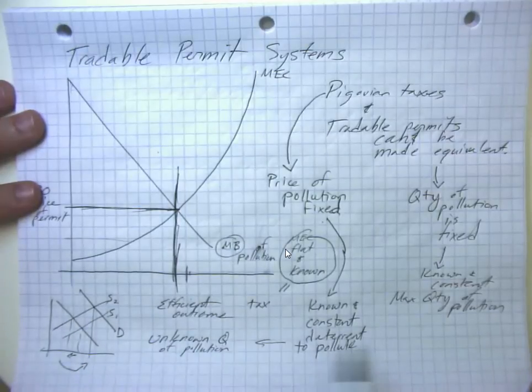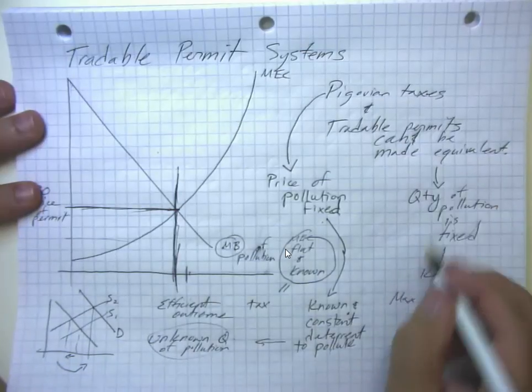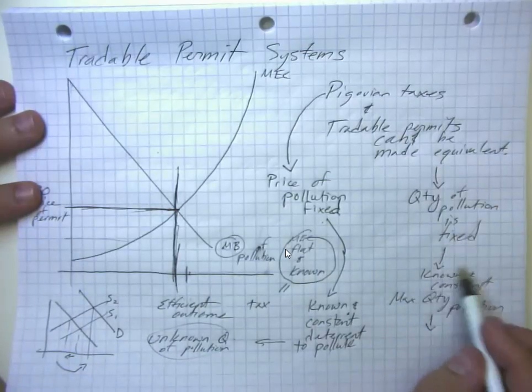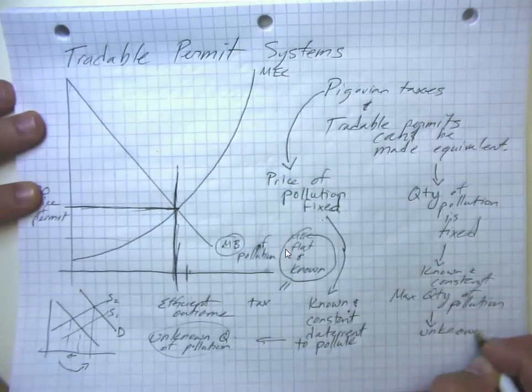So again, known and constant price, but unknown quantity here. If we have tradable permits, we have a known and constant quantity, but we have an unknown and variable deterrent to pollute.